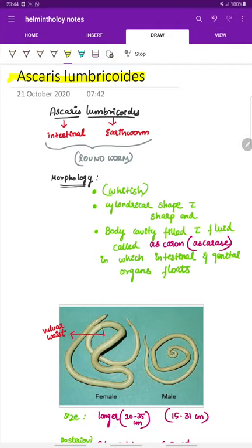Ascaris Lumbricoidus. The Ascaris Lumbricoidus is an intestinal earthworm also commonly called the roundworm because of its appearance.